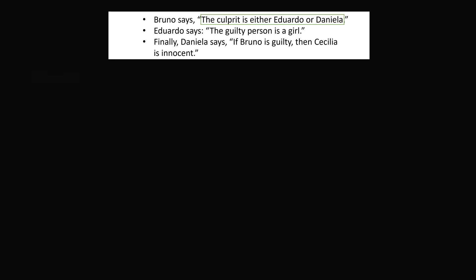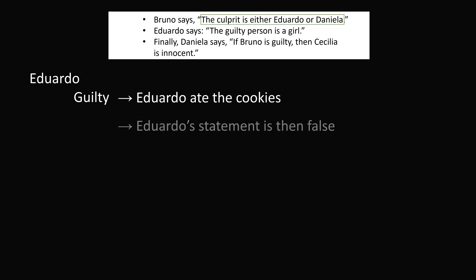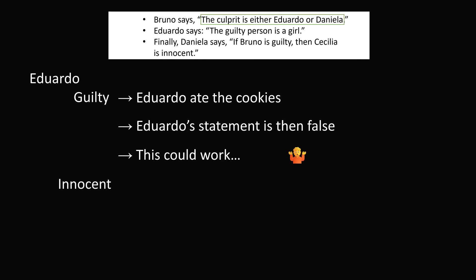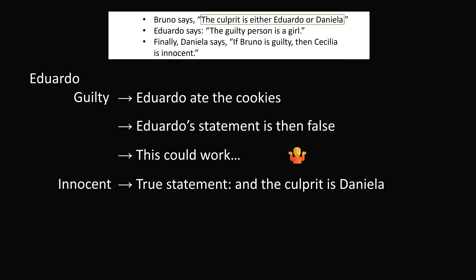Now let's look at Eduardo's statement: the guilty person is a girl. If Eduardo is guilty, that would mean he ate all the cookies, so this statement would be false because the guilty person would be a boy. But this could work — it doesn't contradict any of the other information, so it's possible that Eduardo is guilty. We can't conclude anything further. The same thing happens when we consider if Eduardo is innocent: he would be saying a true statement and the culprit would have to be a girl. And since the culprit is either Eduardo or Daniela, the culprit would have to be Daniela. But at this point, we can't conclude anything just from Eduardo's statement.